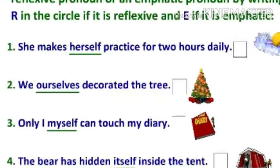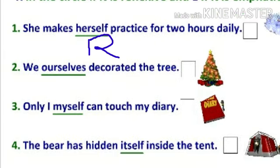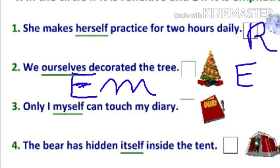So let's do some practice. We have to write here R if it is reflexive and E if it is emphatic. First: she makes herself practice for two hours daily. We can see that herself is not just after the subject, so it is reflexive pronoun. Second: we, ourself, decorated the tree. Here you can see ourself is just after the subject, so it is giving stress to the subject — it is emphatic pronoun.